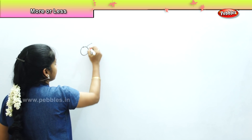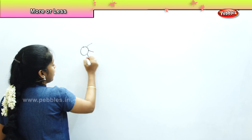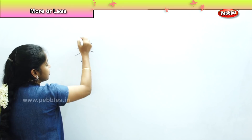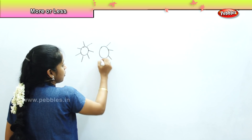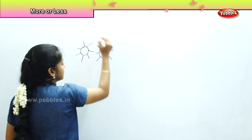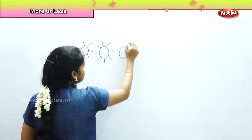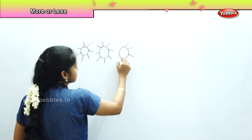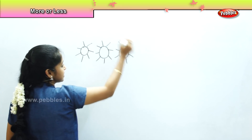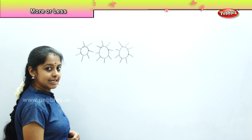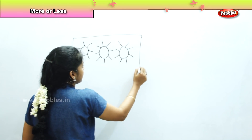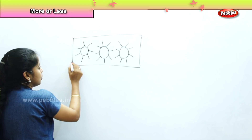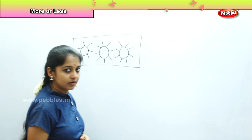Now here, what is the picture showing? This is the picture of a sun. You all have seen the sun? When does it rise? The sun rises in the east in the morning. And what is the color of the sun? It is yellow or orange in color.